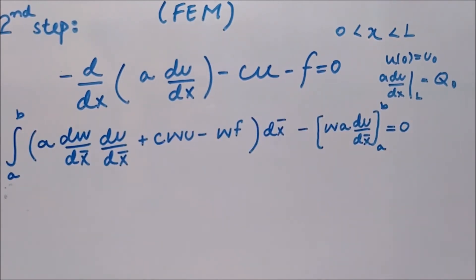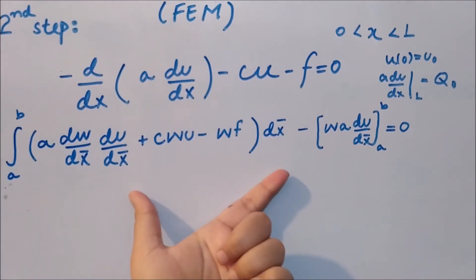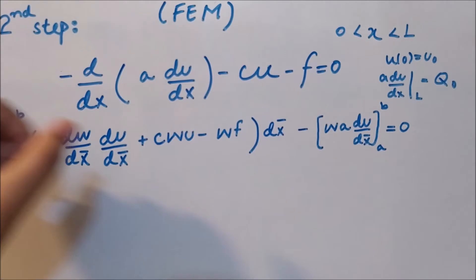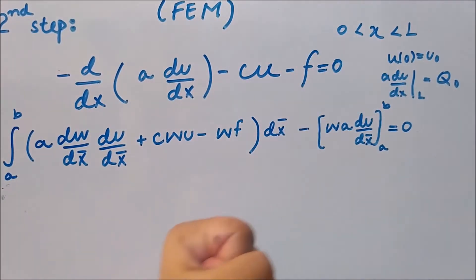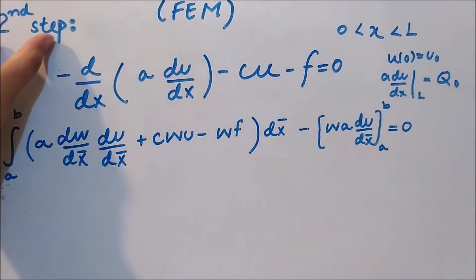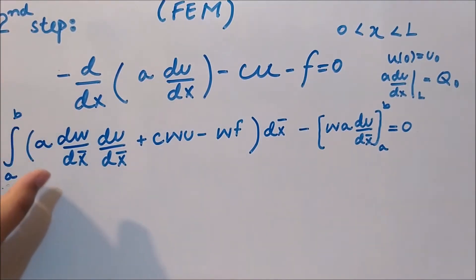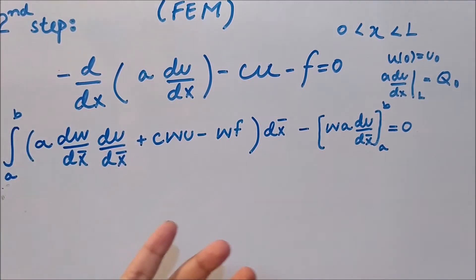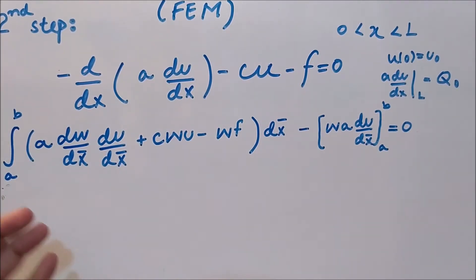This is the product we get after integration by parts. The domain is from a to b, and I have written the domain of x from zero to l. We are in the second step, deriving element level equations. In the previous video we discussed how we can use a local coordinate system to get an intuitive picture of the whole structure, and then convert back to the global coordinate system in the assembly phase.